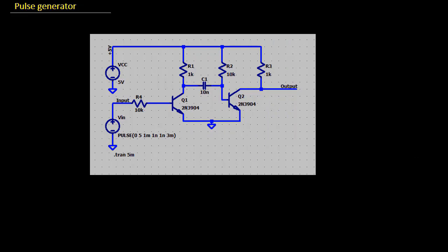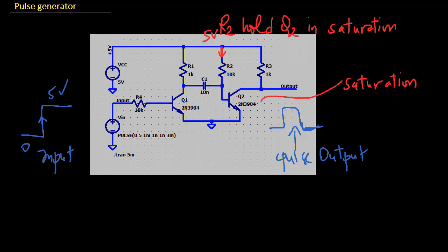By including a simple RC you can make a circuit that gives a pulse output from a step input. Q2 is normally held in saturation by R2 so its output is close to ground. Note that R2 is chosen small enough to ensure Q2's saturation.